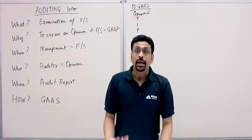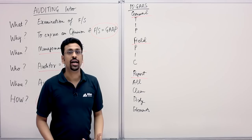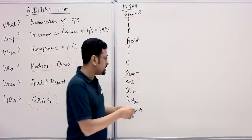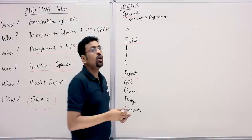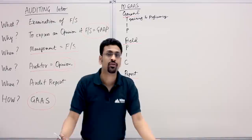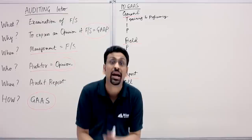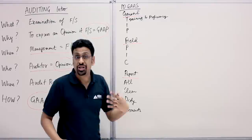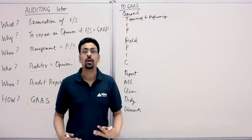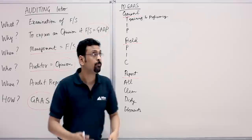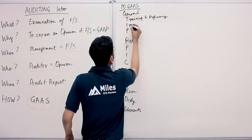Let's talk in detail about each of the 10 Generally Accepted Auditing Standards, starting with the three General Standards. In the mnemonic 'TIP,' the T stands for Training and Proficiency. As an auditor, you're supposed to be properly trained and proficient. Training and proficiency comes from accounting education, practical experience in auditing, and the industry knowledge of the sector in which you're doing the audit.